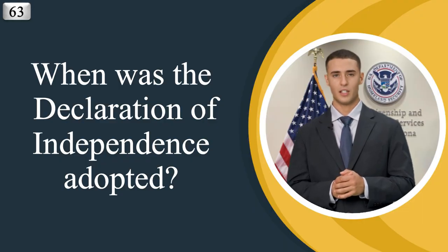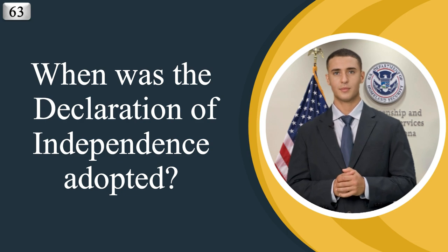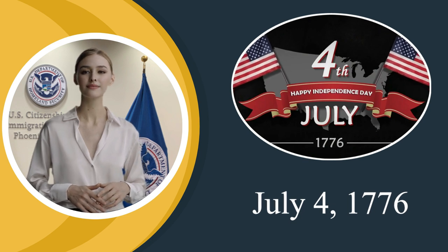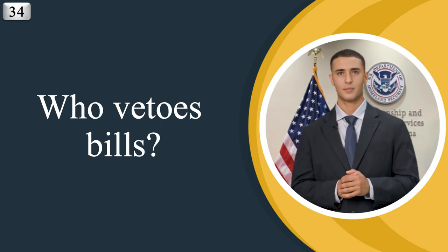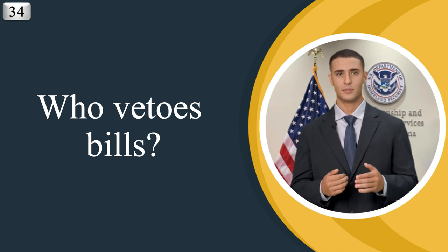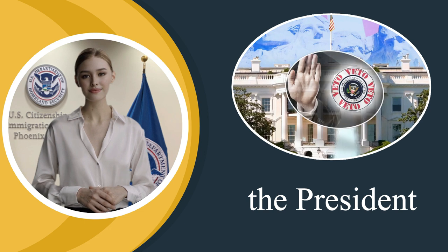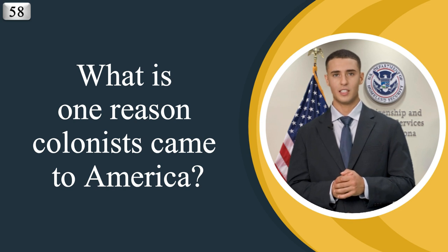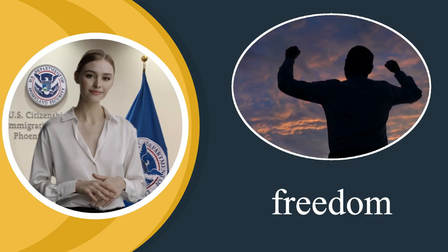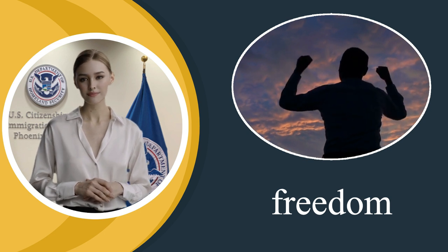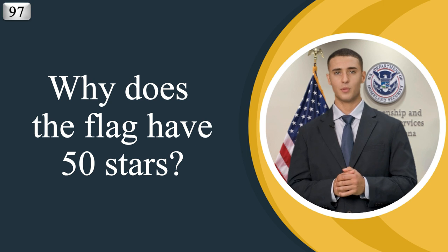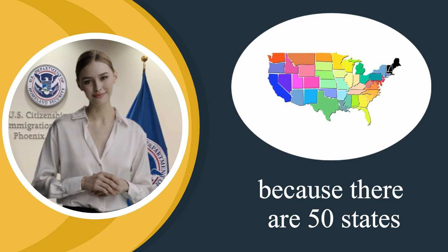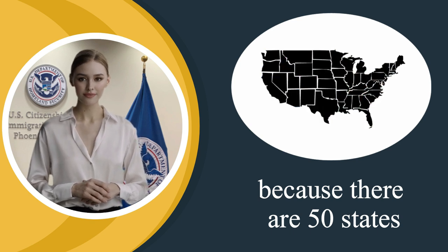When was the Declaration of Independence adopted? July 4, 1776. Who vetoes bills? The President. What is one reason colonists came to America? Freedom. Why does the flag have 50 stars? Because there are 50 states.